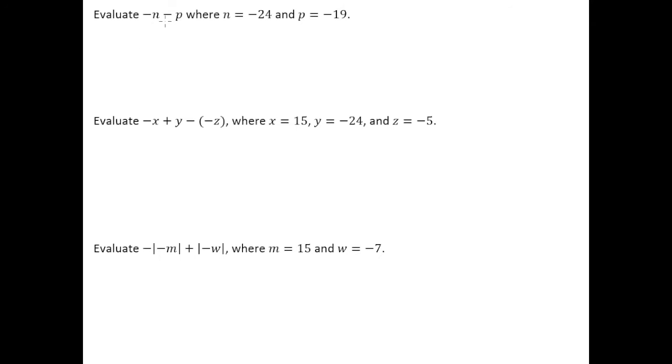I'm going to take this expression and basically rewrite it so I have this negative dropping down, this minus dropping down, but just instead of n I'm going to put what it tells me to put in for n, and that would be negative 24. Since there's already a negative sitting here, I need to make sure that I put that negative 24 in parentheses. And for p I'm going to put negative 19. Since there's already a minus there, I need to put that negative 19 in parentheses as well.